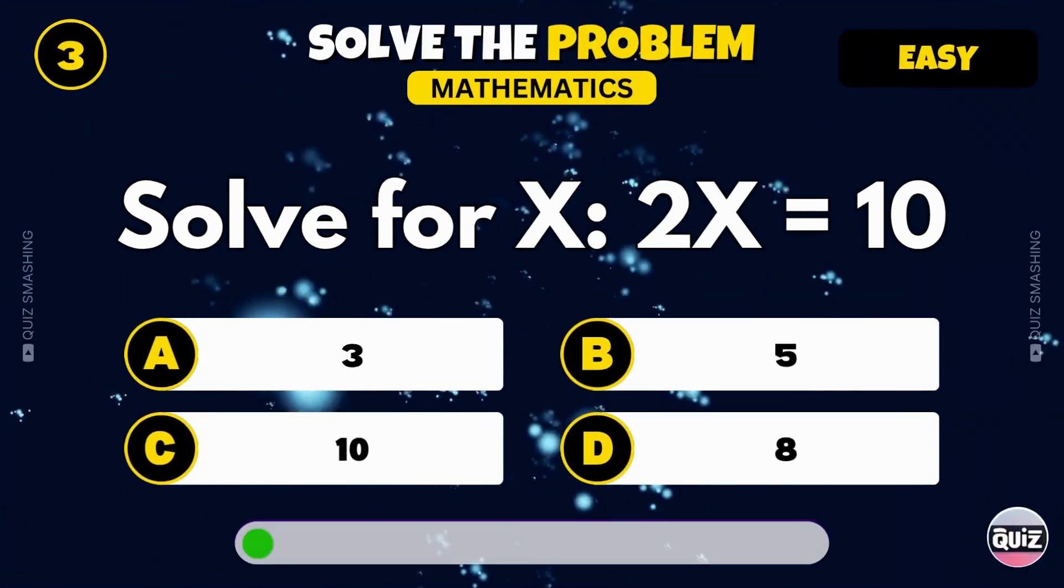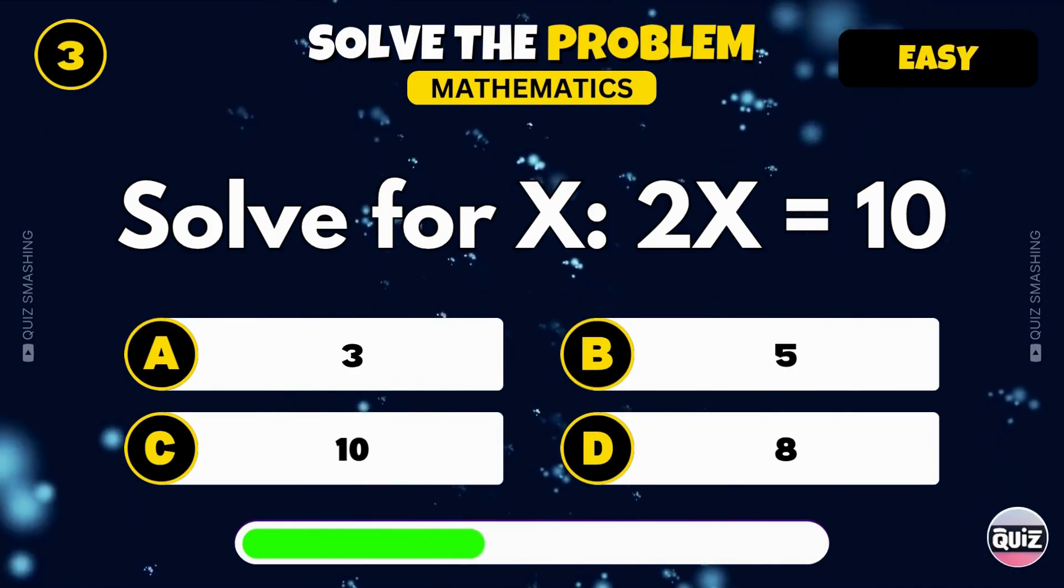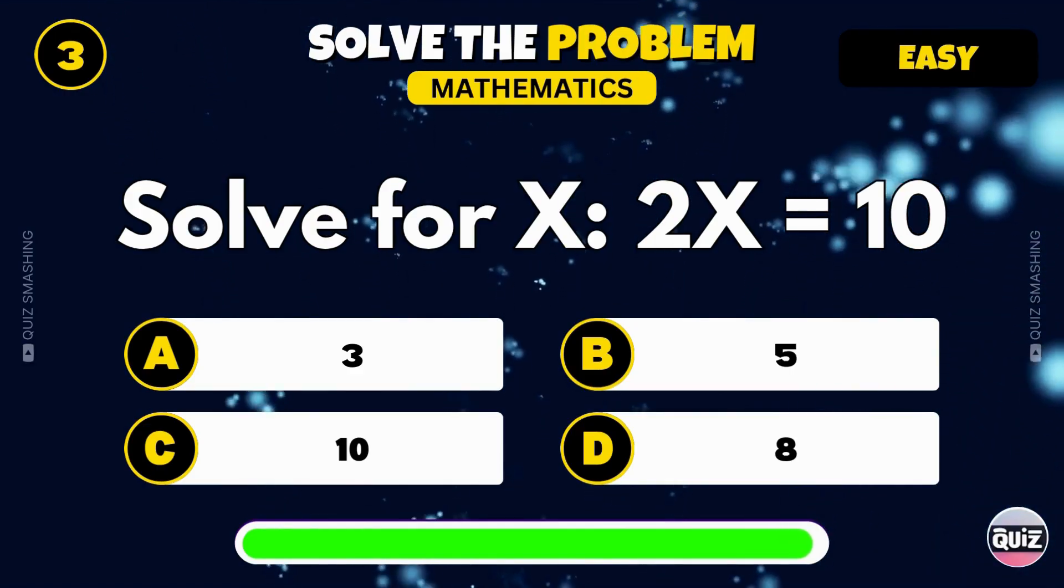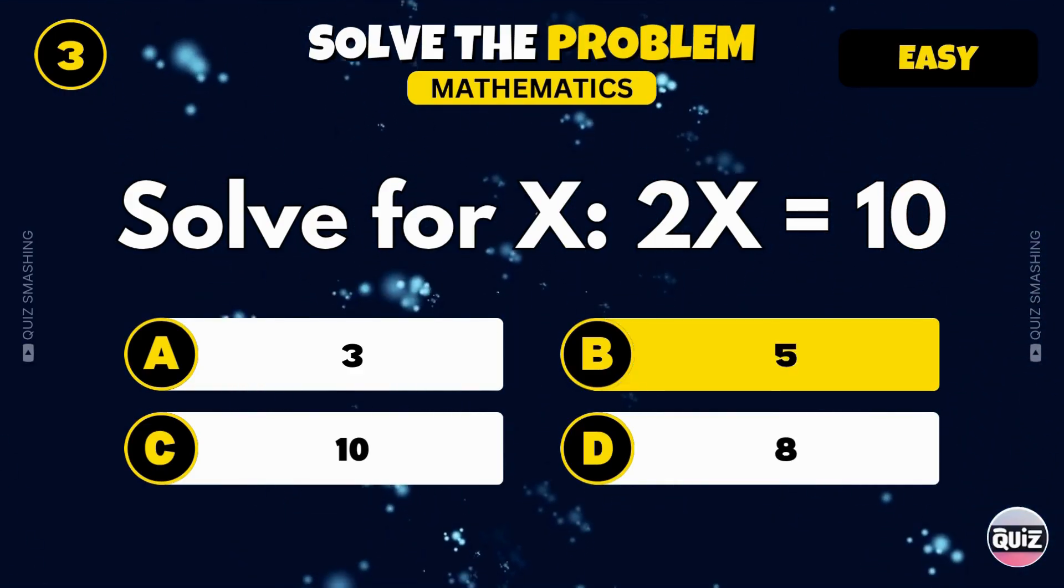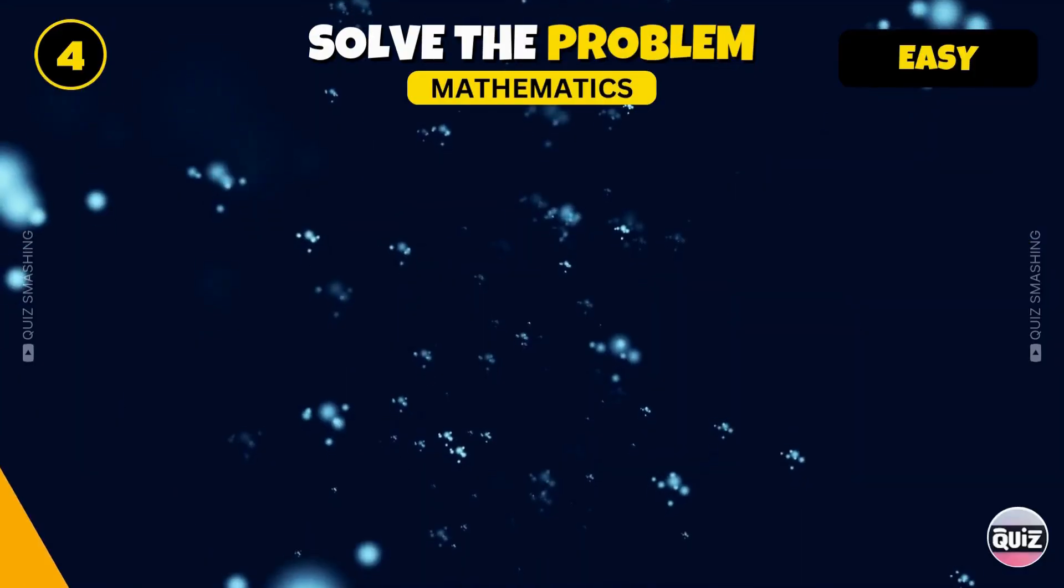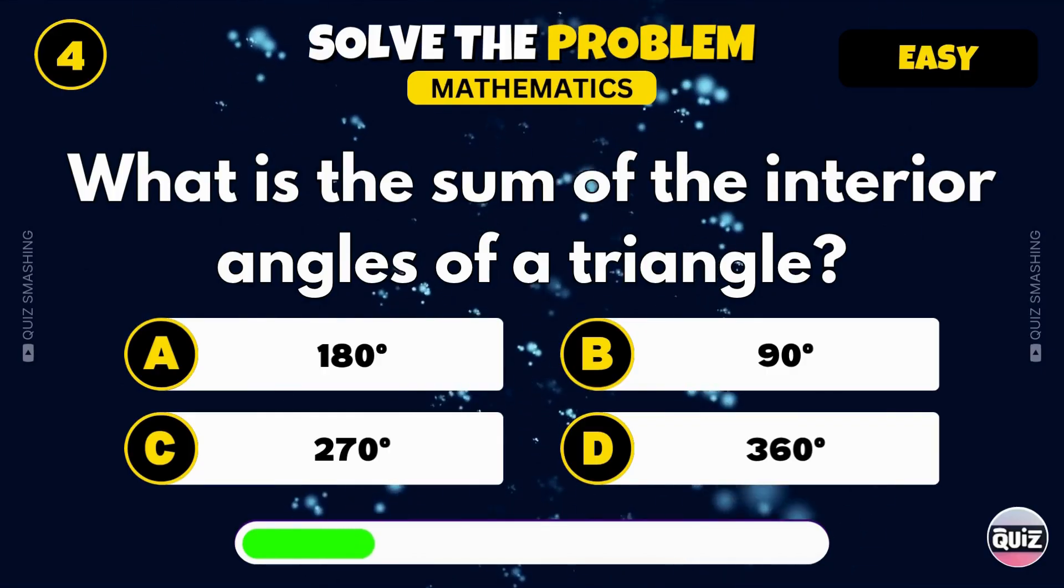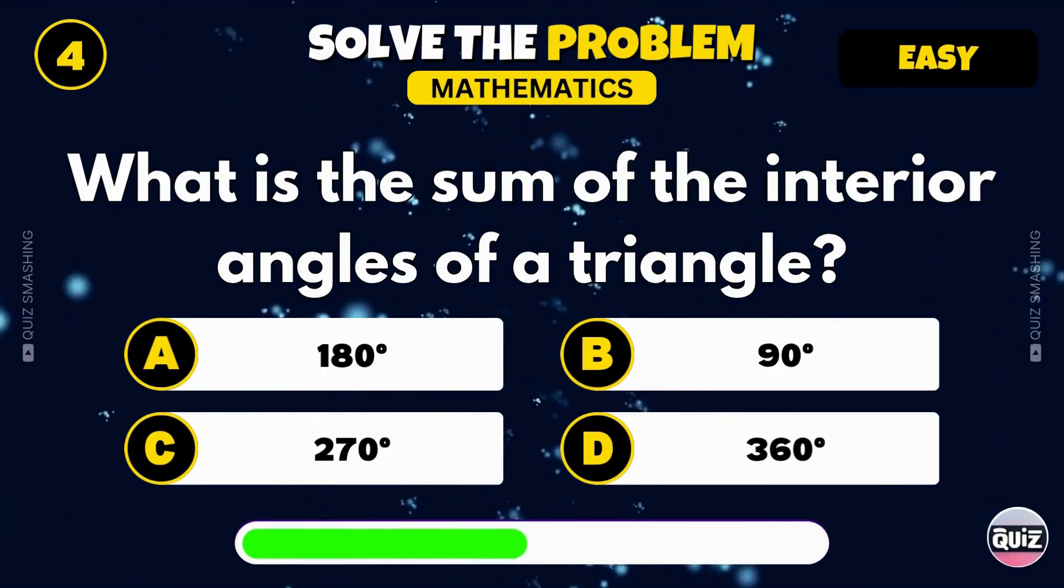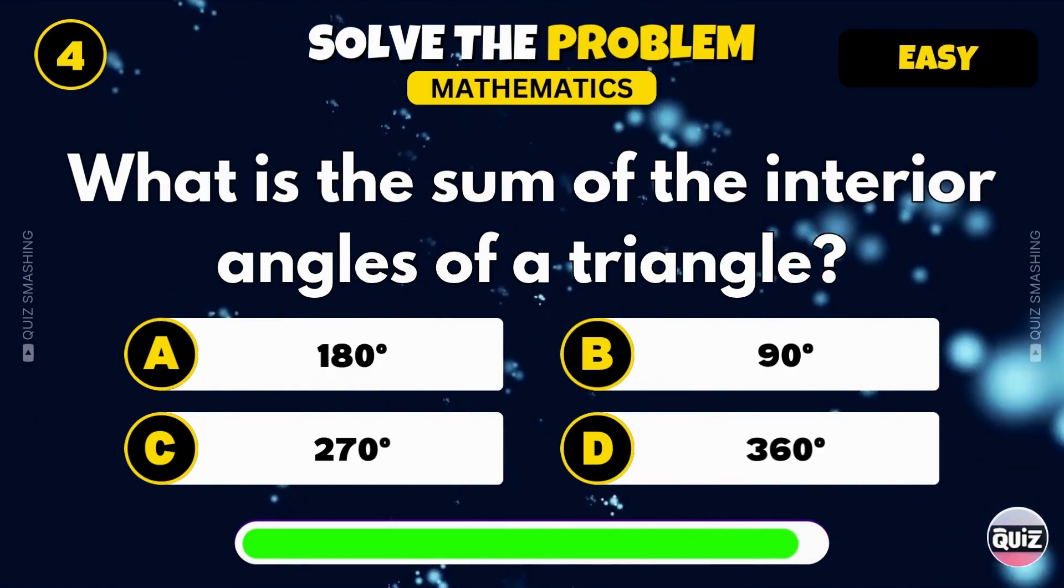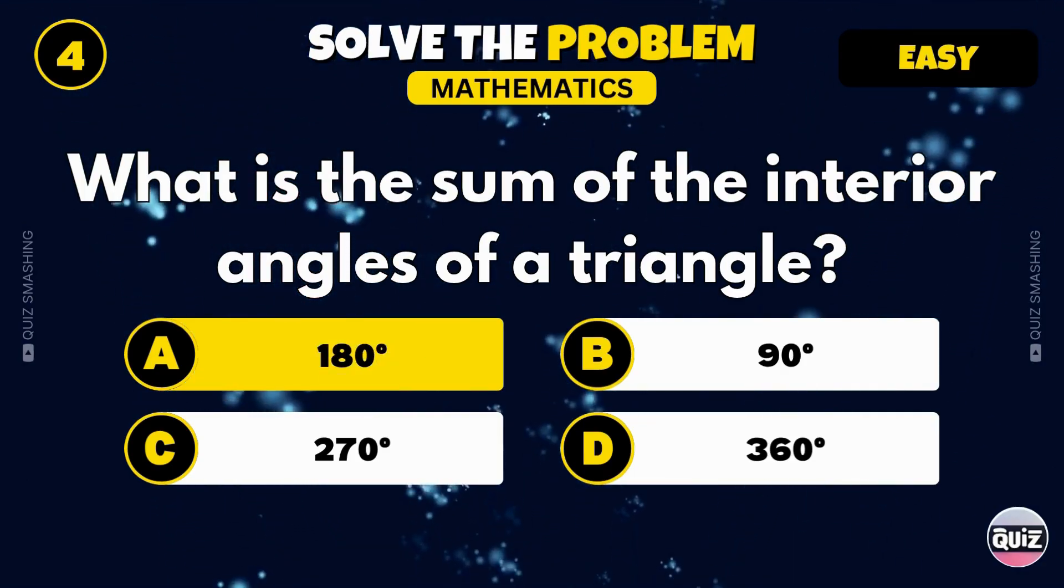Solve for x: 2x equals 10. Great job, x equals 5. What is the sum of the interior angles of a triangle? Exactly, 180 degrees.